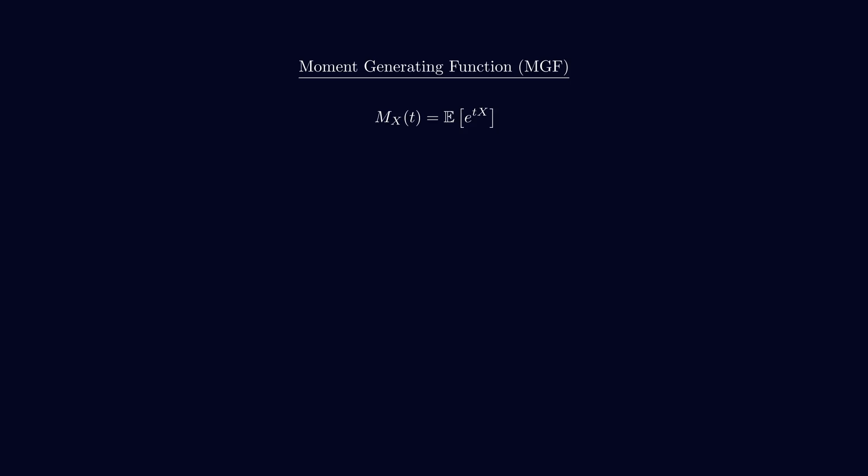To do that, we can look at the Taylor expansion of the exponential function. When we expand it, we get this. Then we can add t. Now, to match the MGF definition, we add the expectation. Now, why do we care about this? Here's the cool part. The MGF makes it really easy to calculate the moments of a random variable.